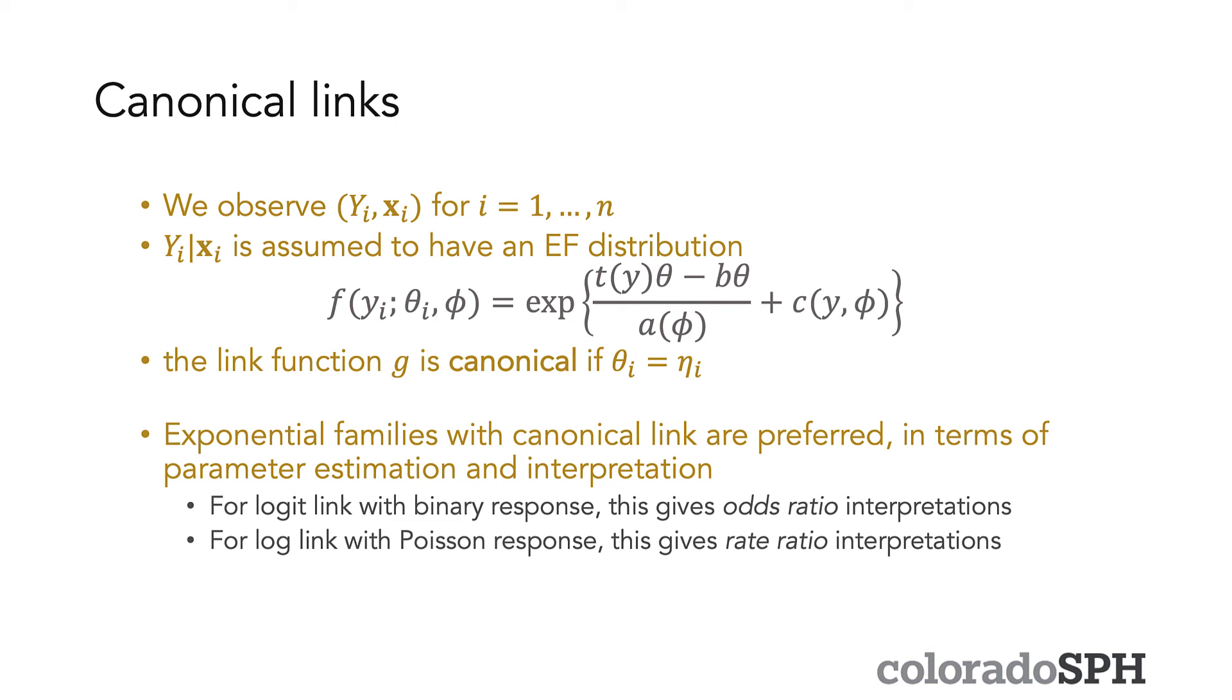And we would say that the link function g is canonical if theta_i is equal to eta_i. Practically speaking, what this means is that you can find the link function g for your outcome y pretty easily once you put y_i in exponential family form. It will give you an ideal link to use in your generalized linear model.